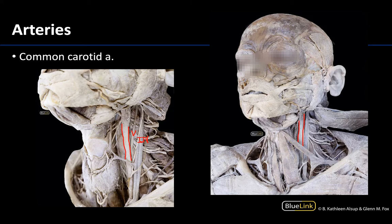Looking over at this image, you can see what we refer to as the carotid bifurcation, where the common carotid splits into its two terminal branches. This typically occurs at about the C3 or C4 level, or just a little bit above the superior border of the thyroid cartilage, which you can see here. The head is tilted a little higher in this particular donor, so it looks a bit higher than the superior portion of the thyroid cartilage.